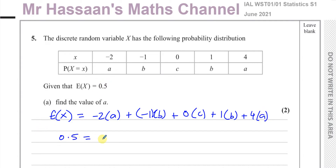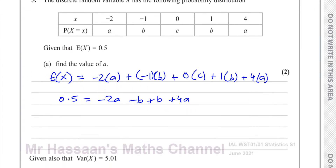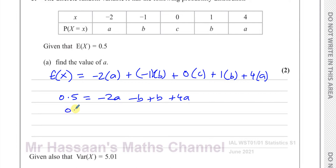So 0.5 equals negative 2A minus B plus 0 plus B plus 4A. The minus B and the plus B cancel out, so you're left with 0.5 equals 2A. Therefore A is equal to 0.25 — divide both sides by 2.